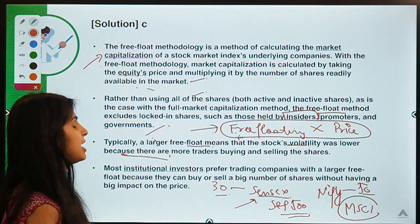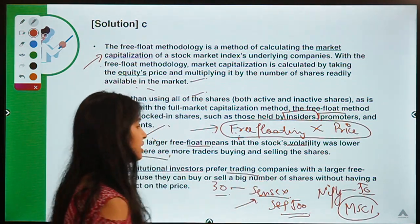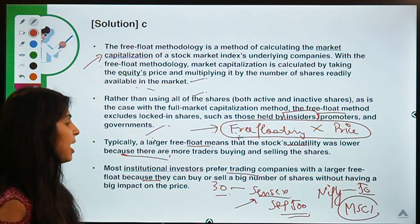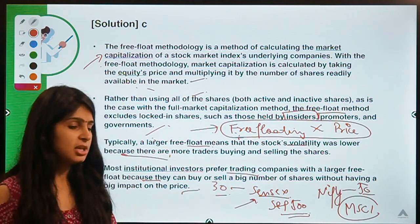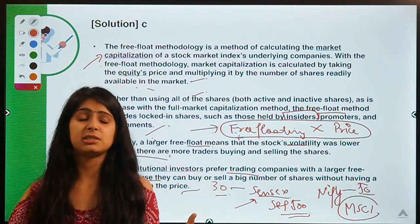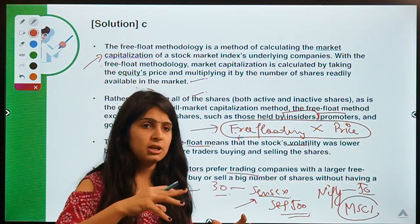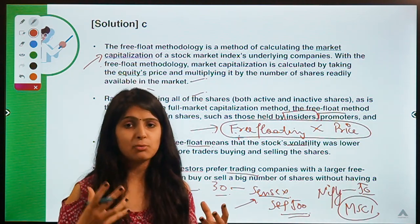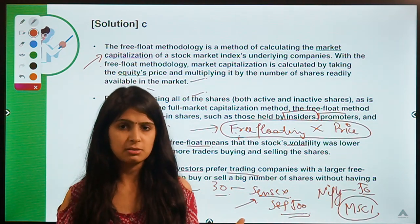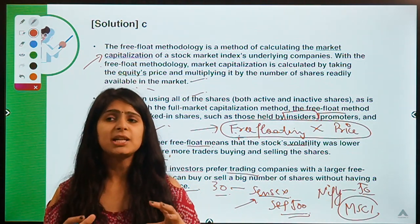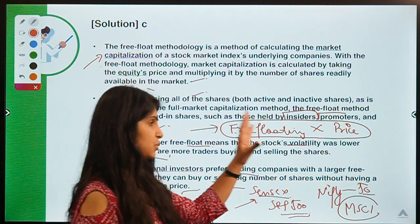Larger free float means lower volatility because there are more traders buying and selling shares. Many institutional investors prefer trading companies with a larger market cap because they can buy or sell a large number of shares without significantly moving the price. For example, a big bank or mutual fund investing in a large-cap company won't cause a dramatic spike in that company's market price.